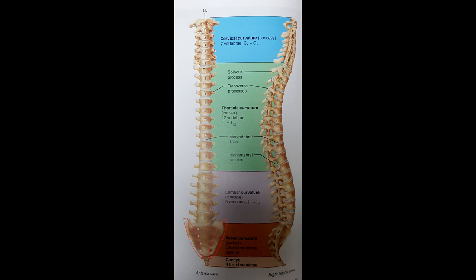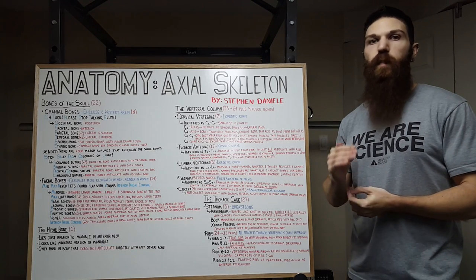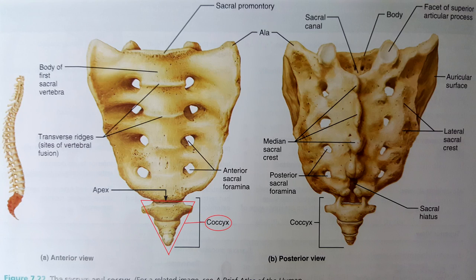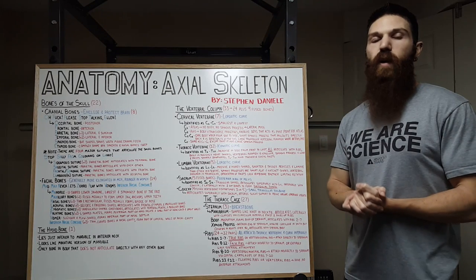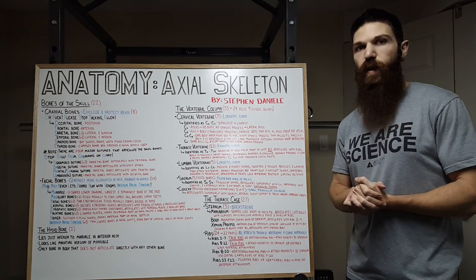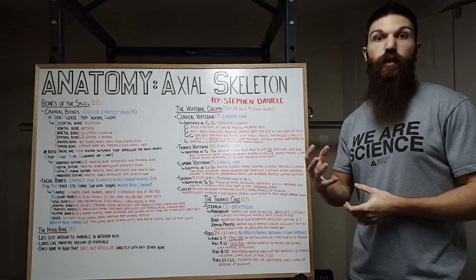Next, we are going to take a look at the coccyx. The coccyx is 4 fused bones; however, some people do have 3 and some people do have 5. They are small and triangular and are commonly known as your tailbone. They articulate superiorly with the sacrum and afford slight support to the pelvic organs. Otherwise, our coccyx is essentially useless — it's basically just a leftover projection from thousands of years ago when we used to have tails.